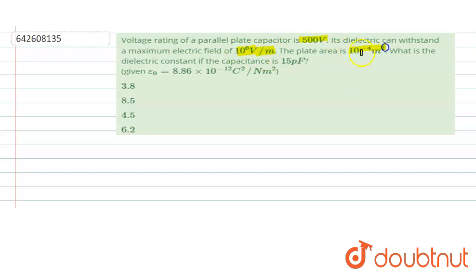The plate area is 10^-4 meter square. We have to find the dielectric constant if the capacitance value is 15 picofarad and epsilon naught value is given as 8.86 × 10^-12 coulomb square per Newton meter square.